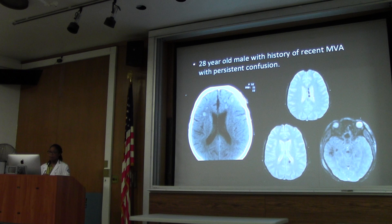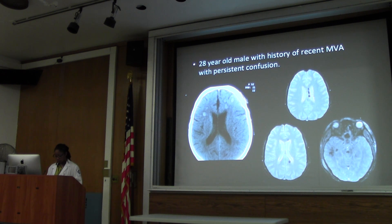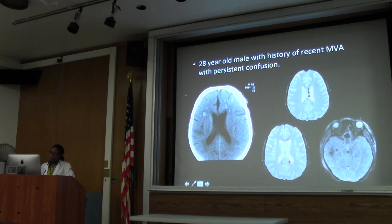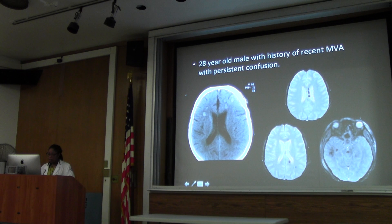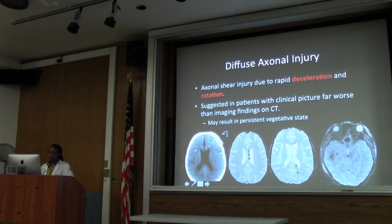Moving on - we have this patient with a history of a recent MVA, coming in with persistent confusion. On the CT, we have focal hyperdense regions, some of them at the grey-white junction and some in the white matter proper. On MRI, we see far more abnormal signal than on CT, along the falx, along the splenium and genu of the corpus callosum, and also in deep white matter and nuclei - areas of hemorrhage. This is diffuse axonal injury, which occurs in very high-speed accidents and rapid deceleration.